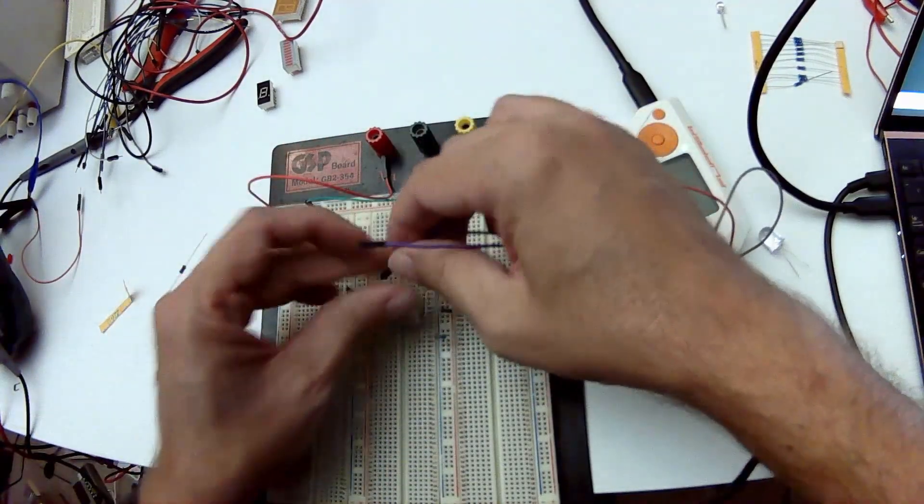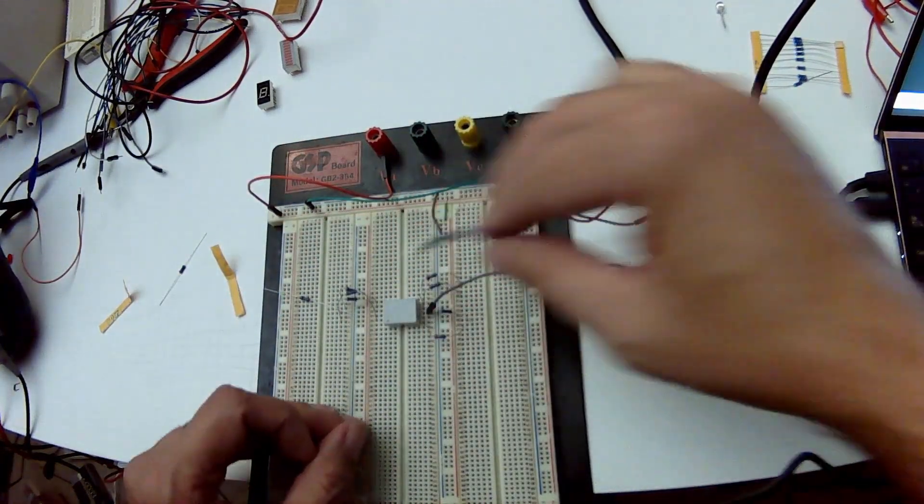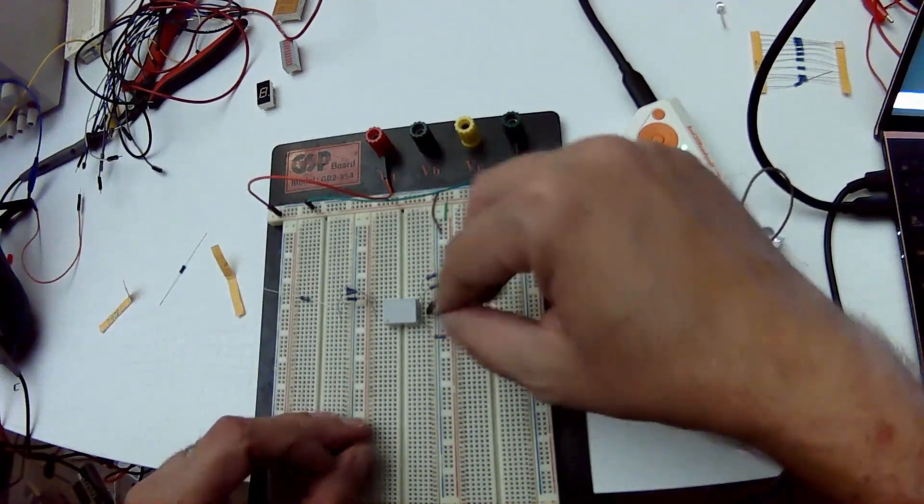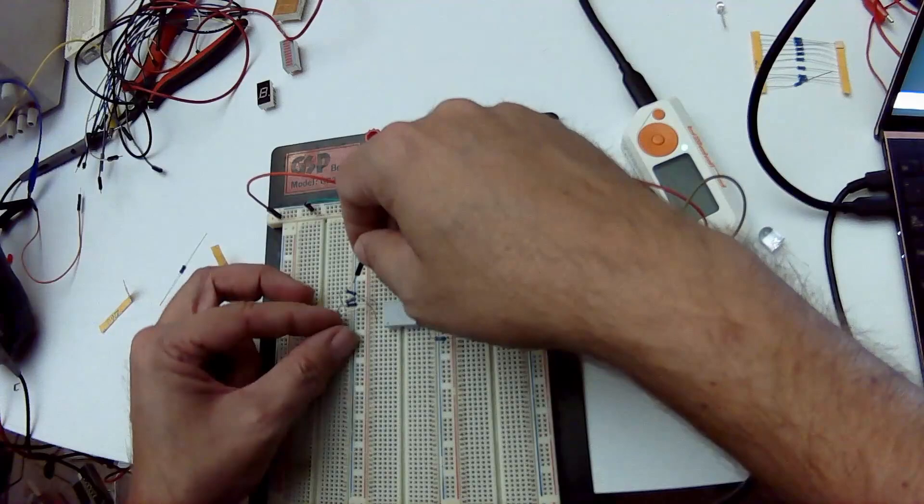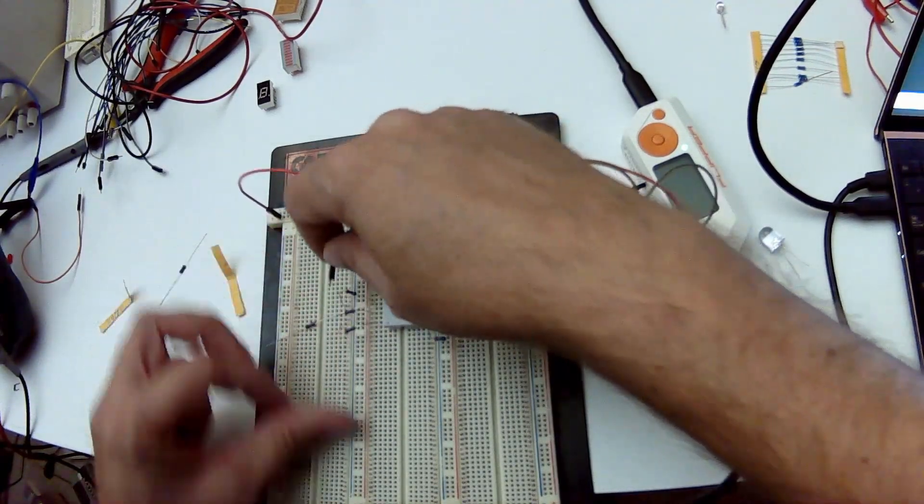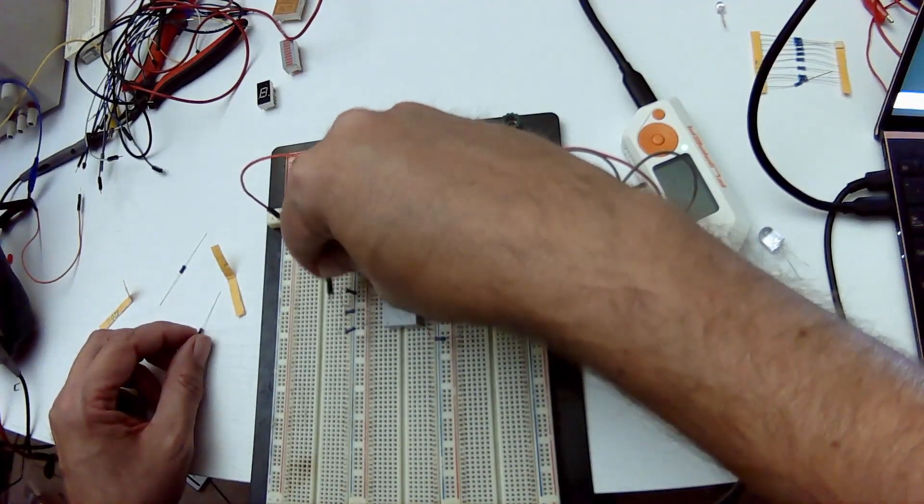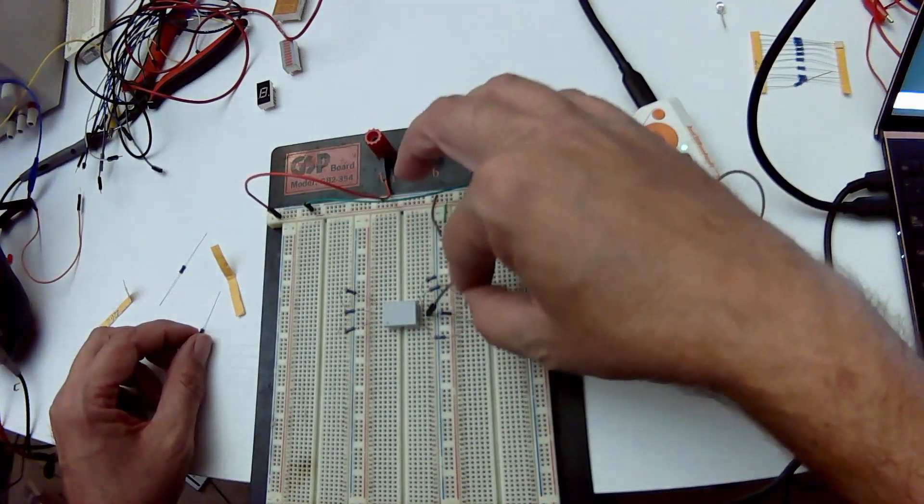Be careful to make sure that none of the leads from the resistors are touching each other and shorting out. Now we'll connect our ground wire. And then on our positive, we're just going to hit all these ends of the resistor to make sure that nothing's shorting out and that only one segment is lighting each time we apply power. Perfect. Looks good.